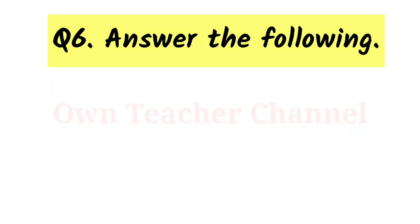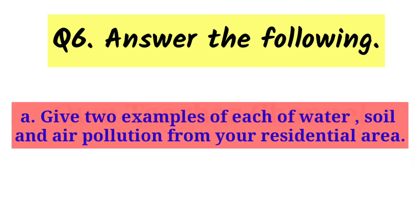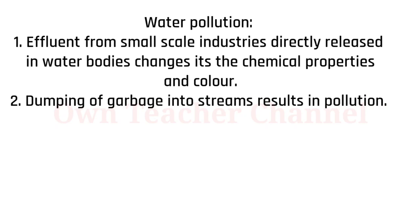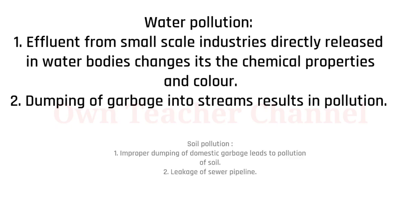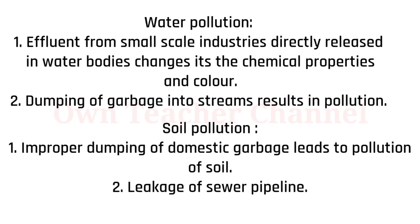Question 6: Answer the following. A) Give two examples each of water, soil, and air pollution from your residential area. Water pollution: 1. Effluent from small-scale industries directly released into water bodies changes the chemical properties and color. 2. Dumping of garbage into streams results in pollution.